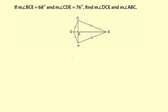If measure of angle BCE is 68 degrees, that's this angle here, and measure of angle CDE is 76 degrees, that's this angle here.